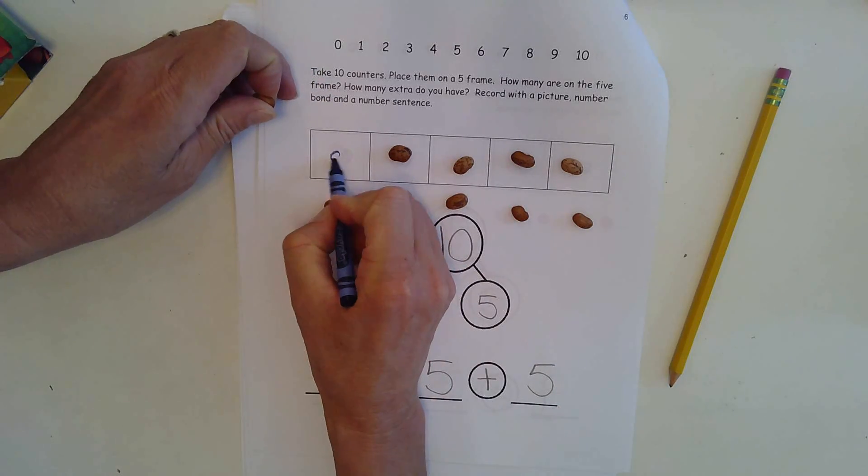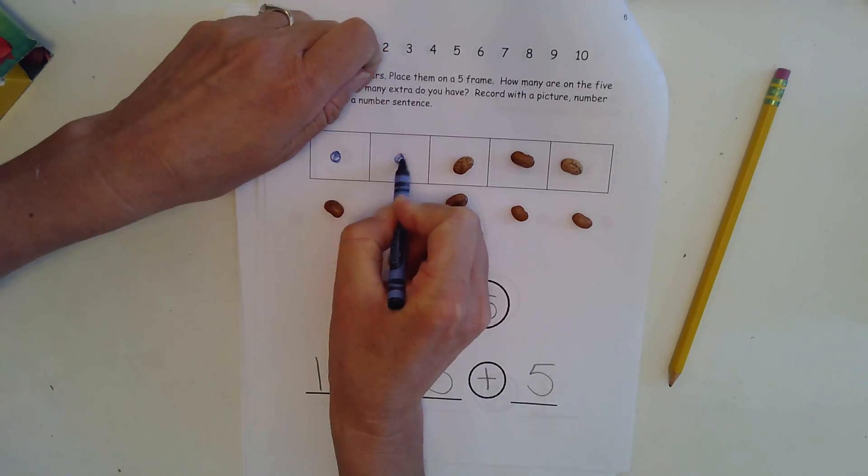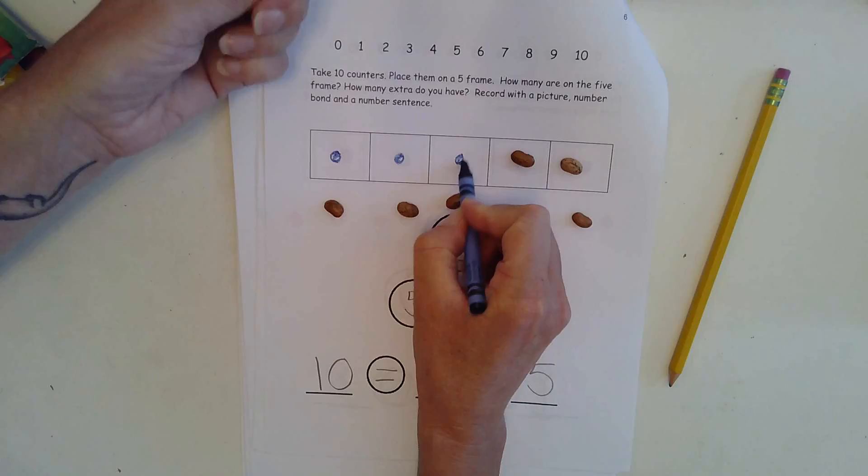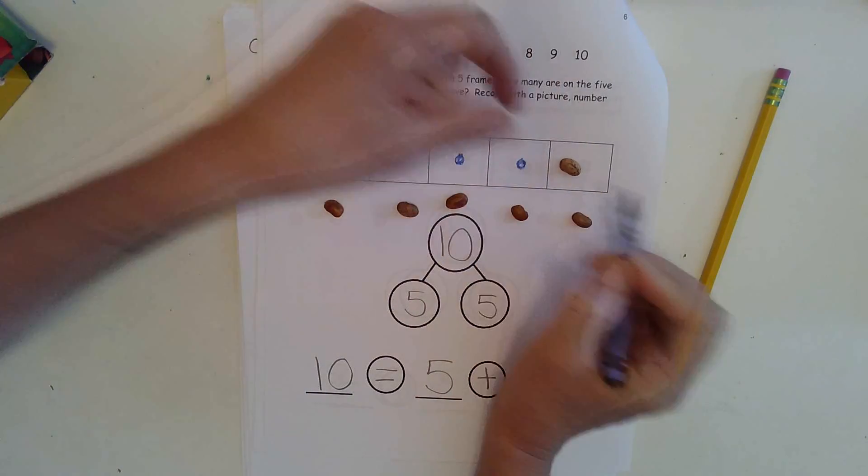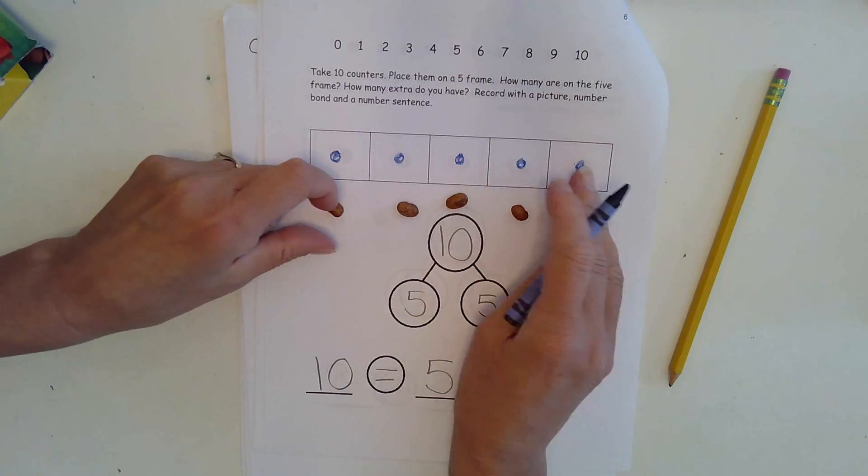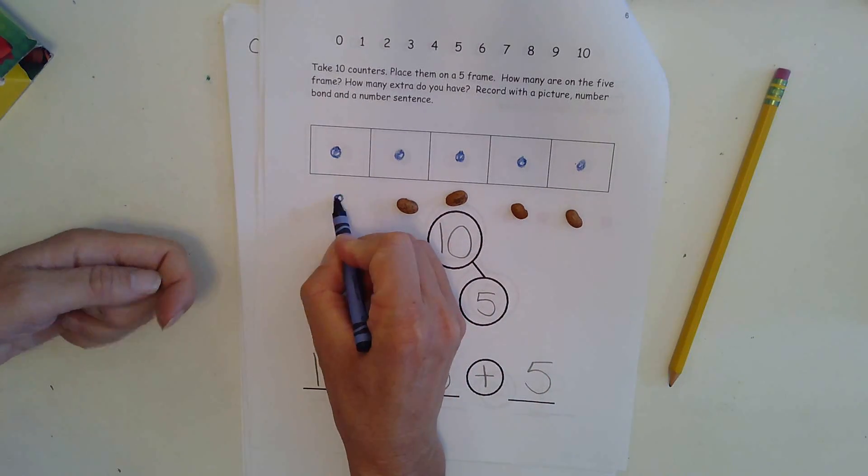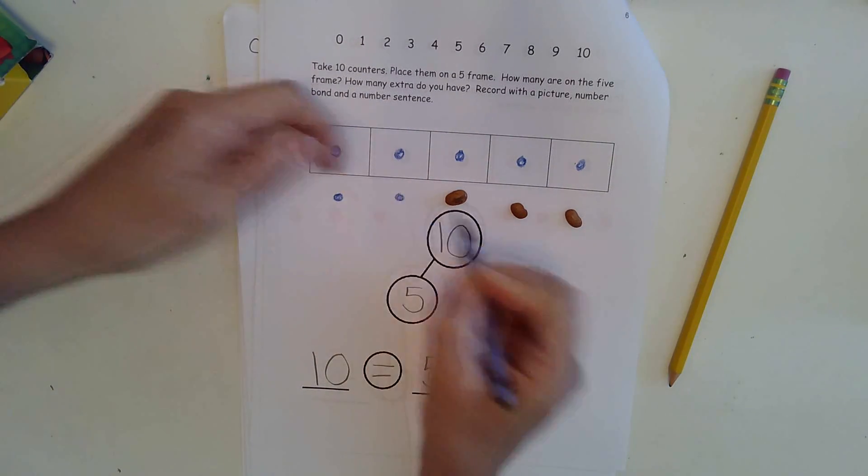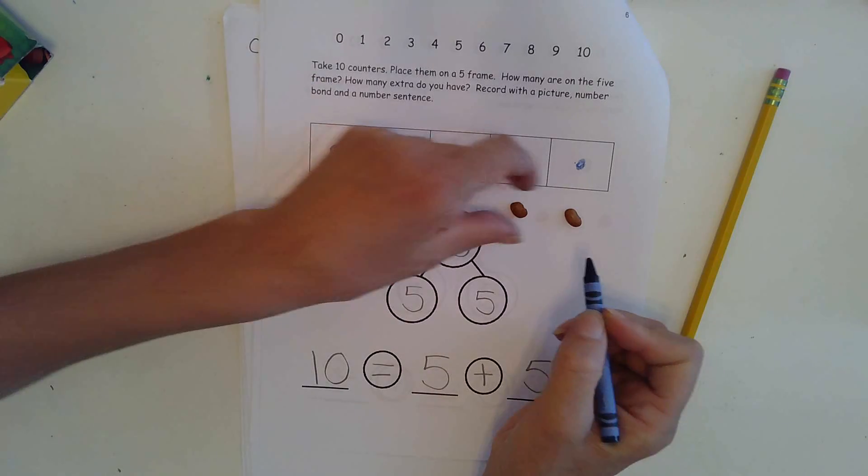So I'm going to do five in the five frame. One, two, three, four, five. And then I will do five under the five frame. One, two, three, four, five.